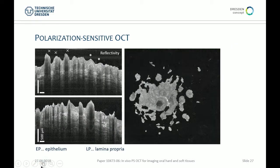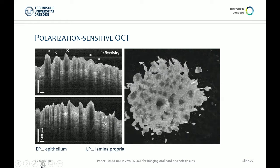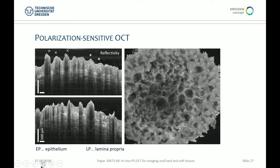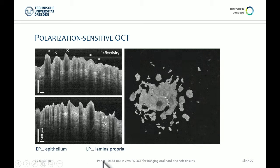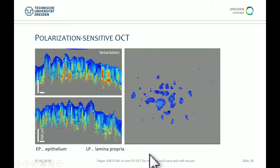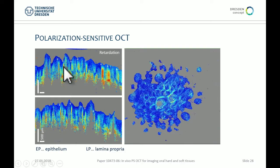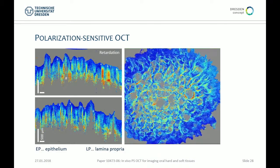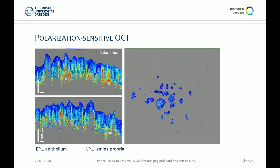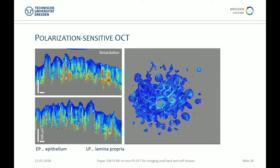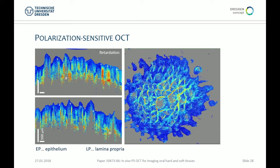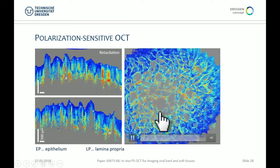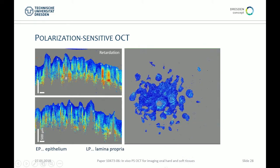We have also imaged the dorsal side of the tongue. There are many papillae on the dorsal side, and the en-face view clearly shows the circular structures of the papillae. What is really impressive is that there is birefringent content already in the epithelial layer — quite surprising. After consulting dentists, the explanation is that it's the collagen fibers forming those papillae. We think these circular structures in the en-face view could be a good marker for healthy oral tongue in the future.